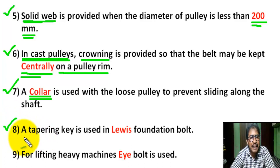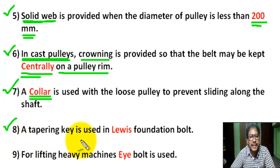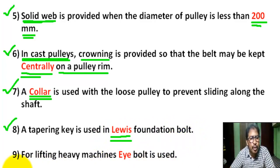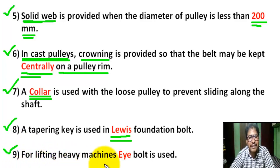Question 8: A tapering key is used in the shaft. Question 9: For lifting heavy machines, an eye bolt is used. The Lewis foundation bolt is also notable in this context.